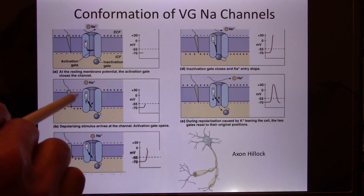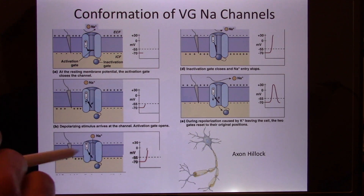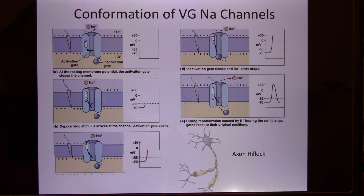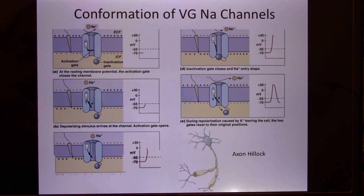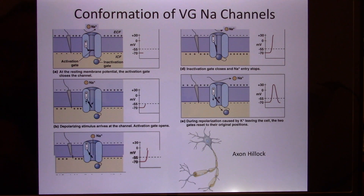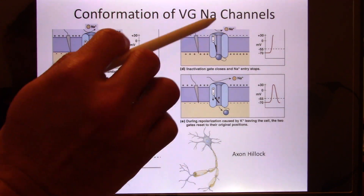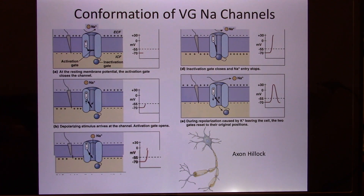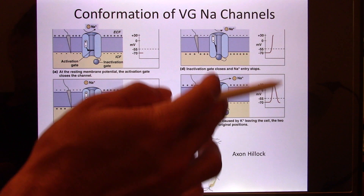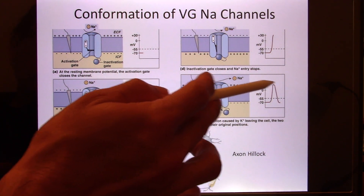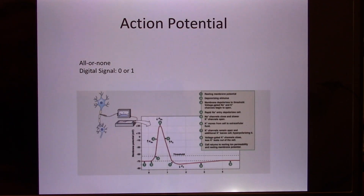When the supra-threshold stimulus reaches the axon hillock, it opens the voltage-gated sodium channels. Sodium quickly flows in, making the inside very positive — like making the membrane most permeable to sodium per the GHK equation. The voltage-gated sodium channel opens quickly and closes quickly. You create a peak that can reach plus 20 to plus 30 millivolts. We call this the action potential.